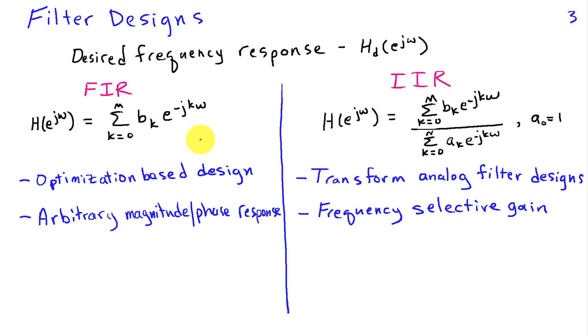Another consequence of the difference between these two types of frequency responses is that because we can formulate optimization-based design strategies, we can find FIR filters that have arbitrary magnitude and phase response. We can try to approximate arbitrary magnitude and phase responses, and the question then is just how big does M need to be to achieve a desired level of approximation.